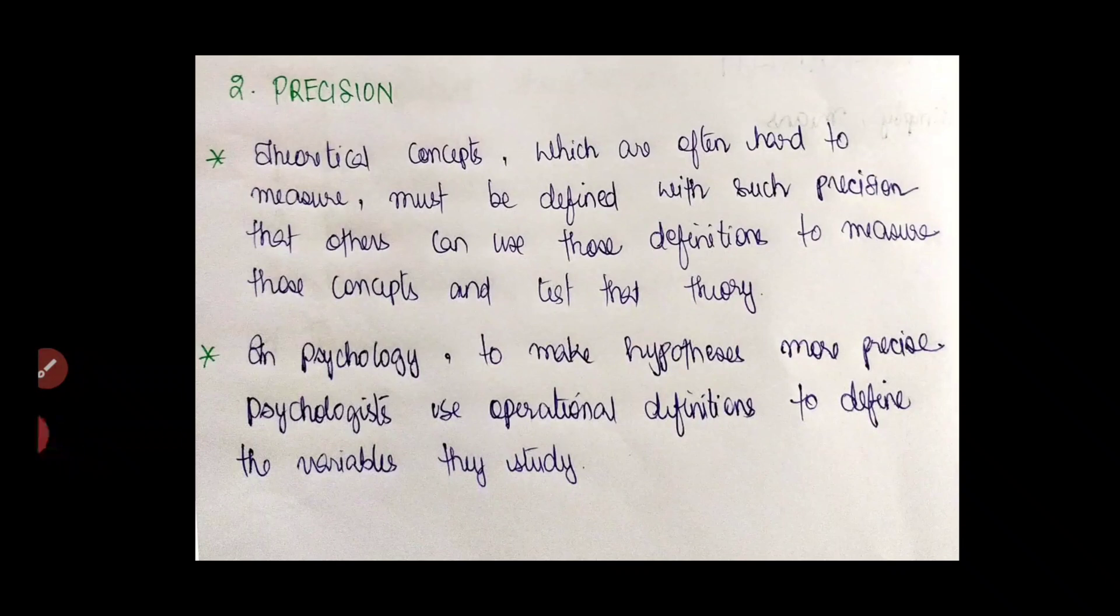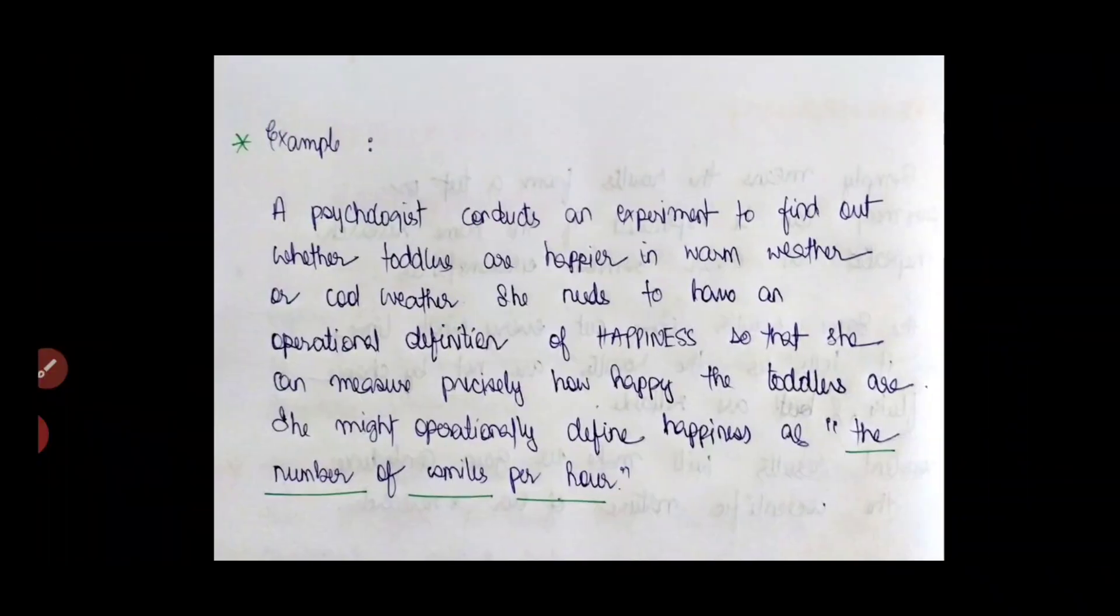I'll explain this with an example and it will be more clear. In psychology, let's take an example. To make hypothesis more precise, what do the psychologists do? They use operational definitions to define the variables they study. So what do I mean by this? So I came across a very interesting example to explain precision and it's very simple and very easy to understand. A psychologist conducts an experiment to find out whether toddlers are happier in warm weather or cool weather.